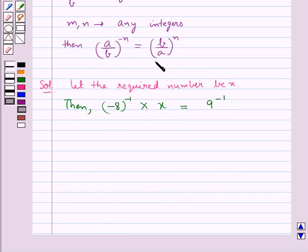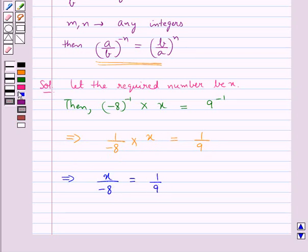Using this law, we get 1/(-8) × x = 1/9. So this gives us x/(-8) = 1/9. That is, we get x = -8/9.